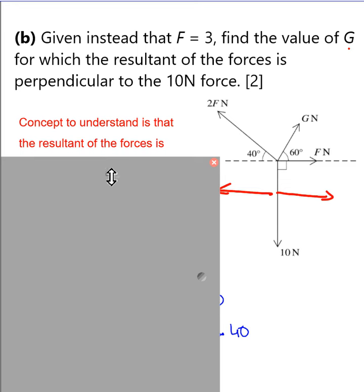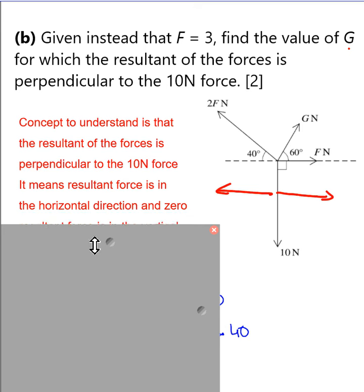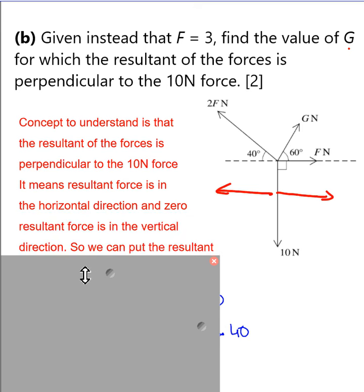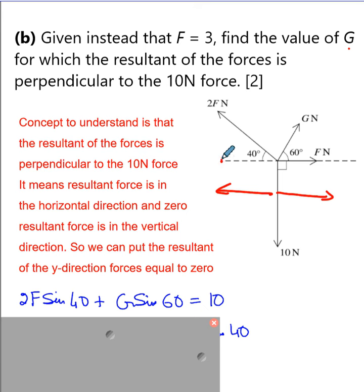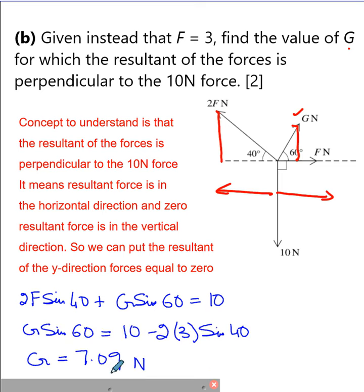So this is the hint given here. Resultant force is in the horizontal direction and zero resultant force is in the vertical direction. This means we can put the resultant of the y direction of vertical forces equal to zero. So this will help us to form an equation. From here your vertical component is 2F sin 40, and in place of F you will write 3. From here for G Newton force this will be G sin 60, and downward force is 10 Newton. Because of this reason I'm making an equation, and then this will help me to find out the G Newton force.